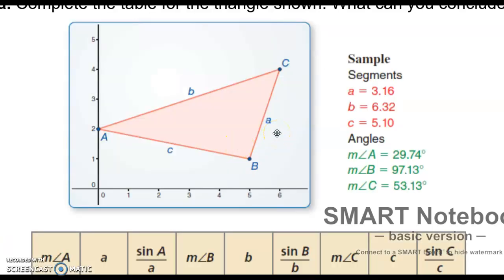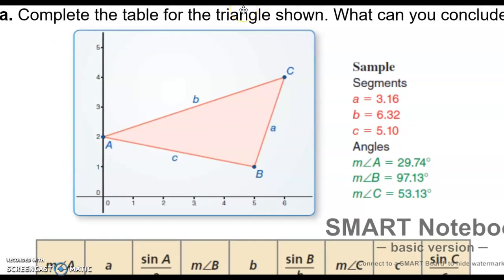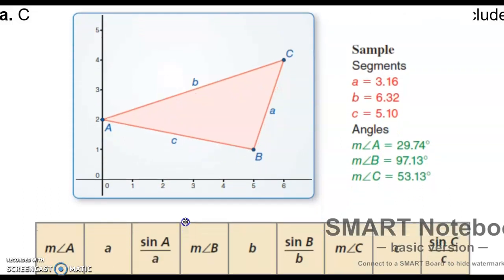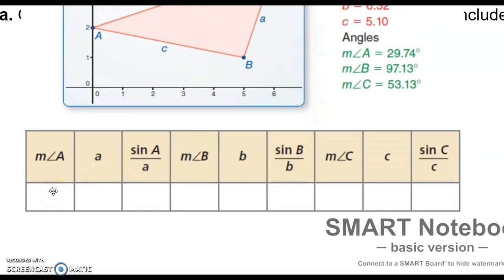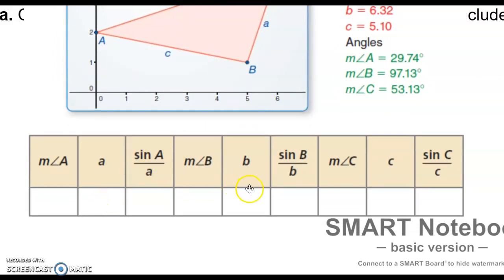We're going to have you do an activity right now. We're going to complete the table for the triangle shown and I want you to look at this and see what you find out. Pause the video and copy down these values in your notes. You have a table in your notes and you're going to fill in the answers. Where it says angle A you'll put 29.74, angle B 97.13, and so on. Side A you'll put 3.16, side B 6.32, and so on.